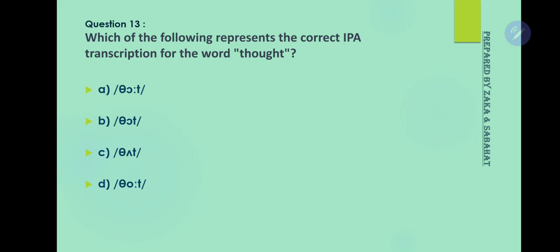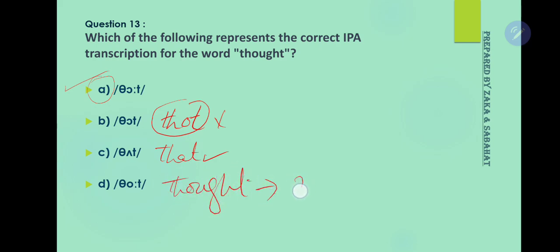Question 13: Which of the following represents the correct IPA transcription of the word 'thought'? Option A is the correct answer. Option B is not a standardized transcription for 'thought'. Option C may be a correct pronunciation for 'that', and option D is a non-standard transcription of 'thought'. So option A is the correct standardized IPA transcription.